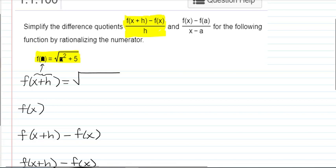So in this case, that would be the square root of x plus h squared plus 5. Now, a lot of times people think that they can take the square root of each part, but that's false. This is not equal to the square root of x plus h squared plus the square root of 5.